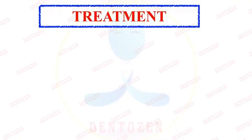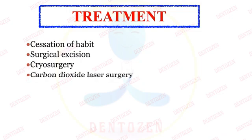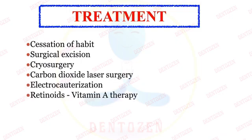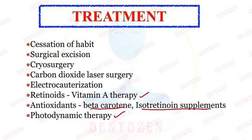For treatment, we must eliminate the cause — primarily tobacco — and cessation of the habit is important. If moderate or severe dysplasia is found on biopsy, surgical excision is required, which can be done via cryosurgery, carbon dioxide laser surgery, or electrocauterization. Chemotherapy options include retinoids, vitamin A therapy, antioxidants, beta-carotene, and isotretinoin supplements. Photodynamic therapy can also be given. If dysplasia is absent, the patient is advised to quit the habit and regular follow-up is maintained — even after surgical excision, to monitor for recurrences.